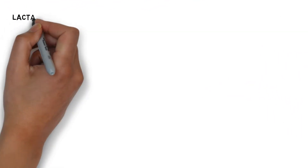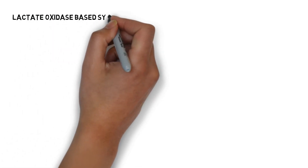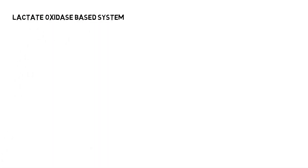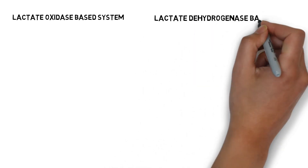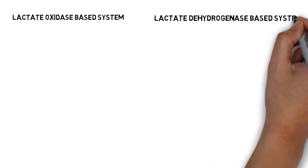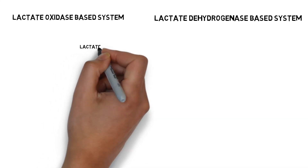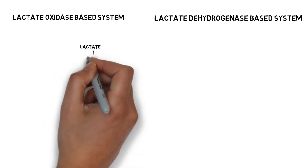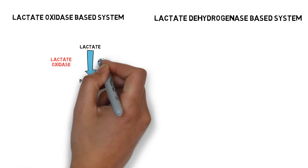In general, there are two main ways to measure lactic acid. One relies on the lactate oxidase system and the other on the lactate dehydrogenase system. The lactate oxidase system metabolizes lactate into pyruvate, producing hydrogen peroxide, which can be detected by the system.